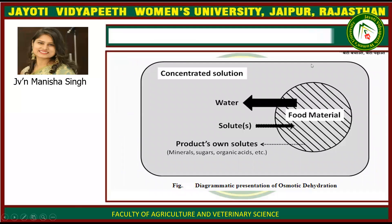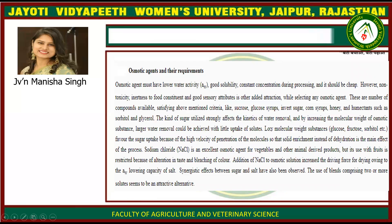In the diagram, water is removed from the food material and moves outward, solute moves inward, and the product's own solutes — minerals, sugar, organic acids, etc. — all move outward. Osmotic agents must have lower water activity, good solubility, constant concentration during processing, and should be cheap. Additionally, non-toxicity, inertness to food constituents, and good sensory attributes are considered when selecting any osmotic agent.